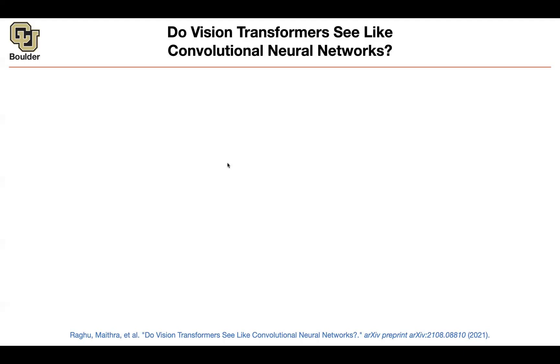We went through a couple of architectures using transformers. The question is: do they see the same way, or do they see differently from a convolutional neural network?